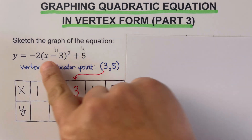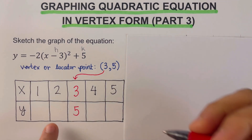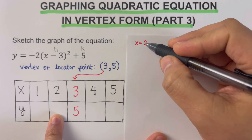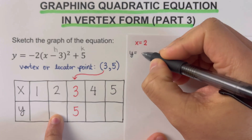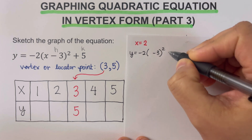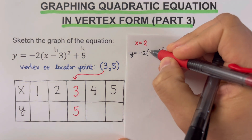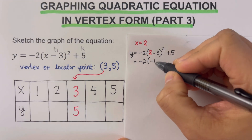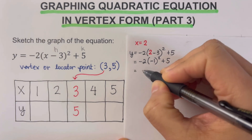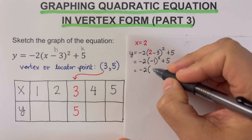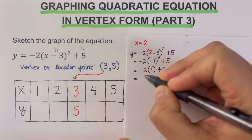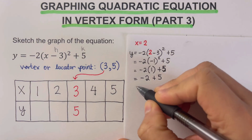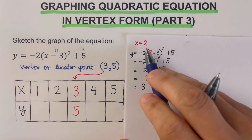We use the equation to determine the y-values. Starting with x = 2: y equals negative two times (2 minus 3) squared plus 5. That gives negative two times (negative one) squared plus 5, which is negative two times 1 plus 5, so negative two plus five equals positive three. The y-value when x = 2 is three.